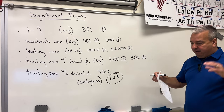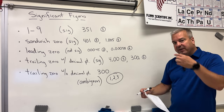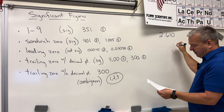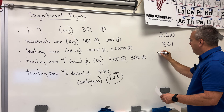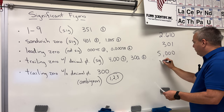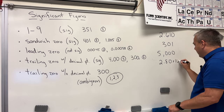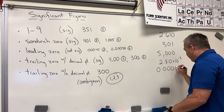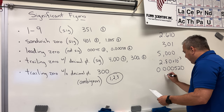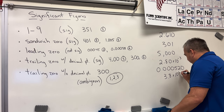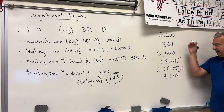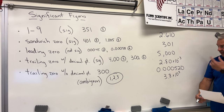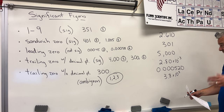Before we go further, let's do some practice counting significant figures, because you need that skill for multiplication and division. I'm going to put a set of numbers up here. If you want to pause the video and try this yourself before I reveal the answers, you can. The numbers are: 2.610, 301, 5,000, 2.80 times 10 to the negative 3, 0.000520, and 3.8 times 10 to the fifth power.